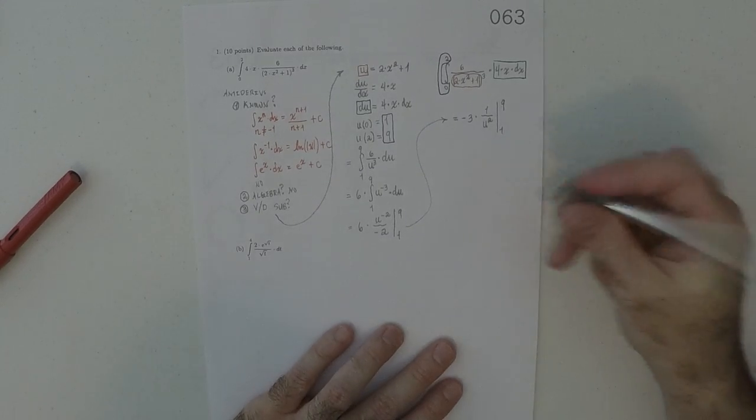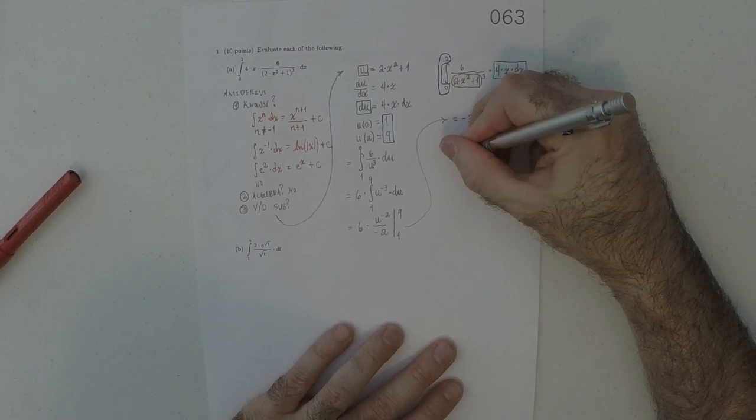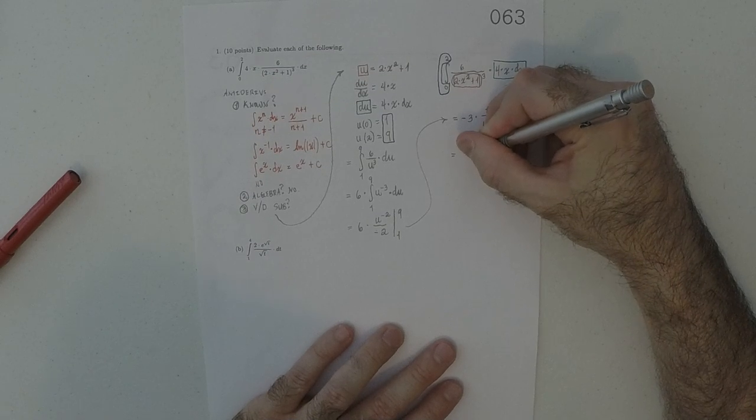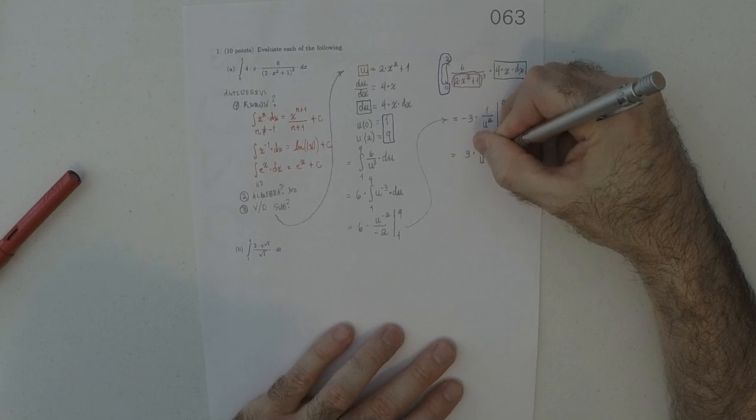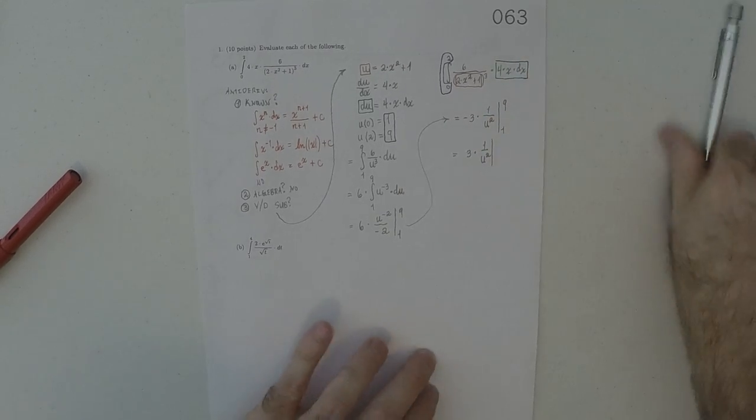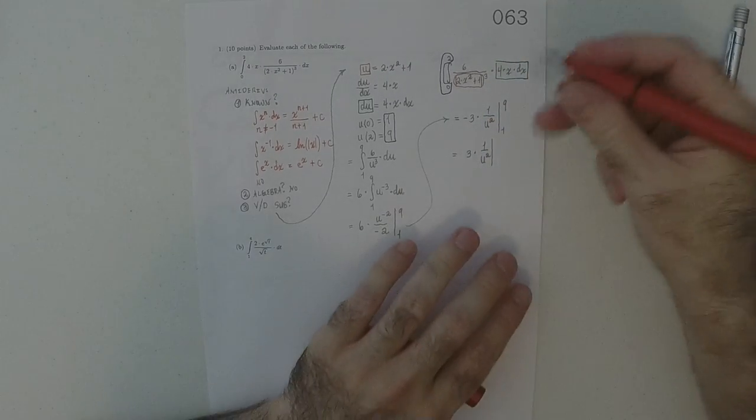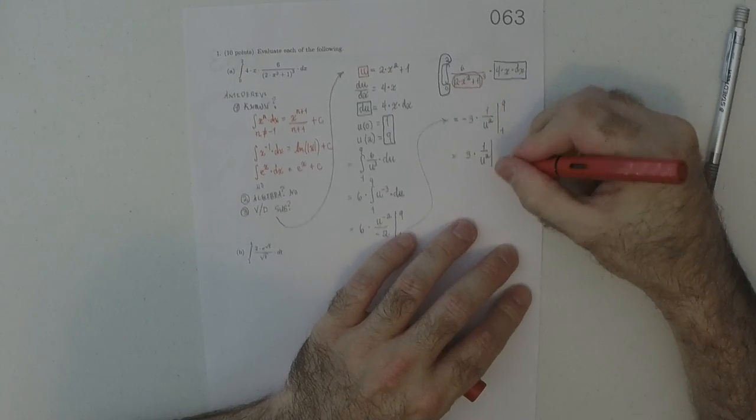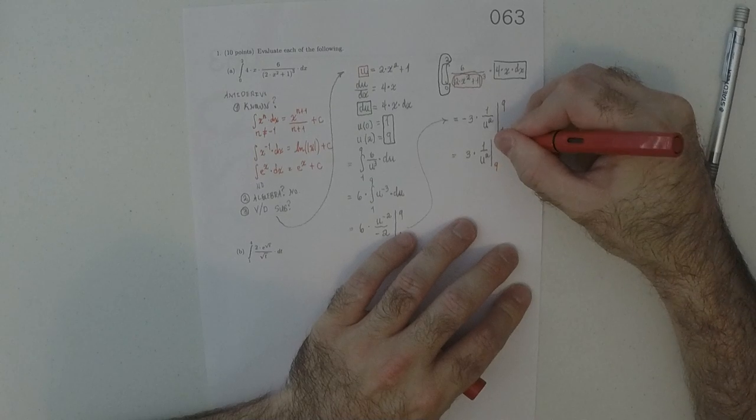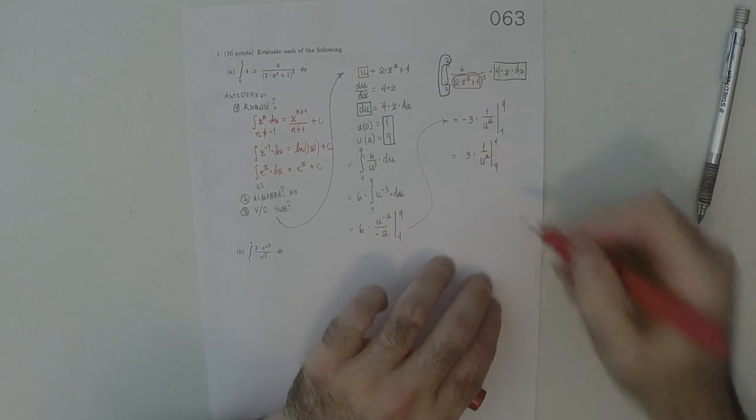And then, finally, to get rid of the negative, I'm going to say that this is 3, 1 over u squared, evaluated, and to make sure you don't miss what I'm doing. So, this negative is going away, and the way I'm making the negative go away is I'm going to change the order of the boundary evaluation.